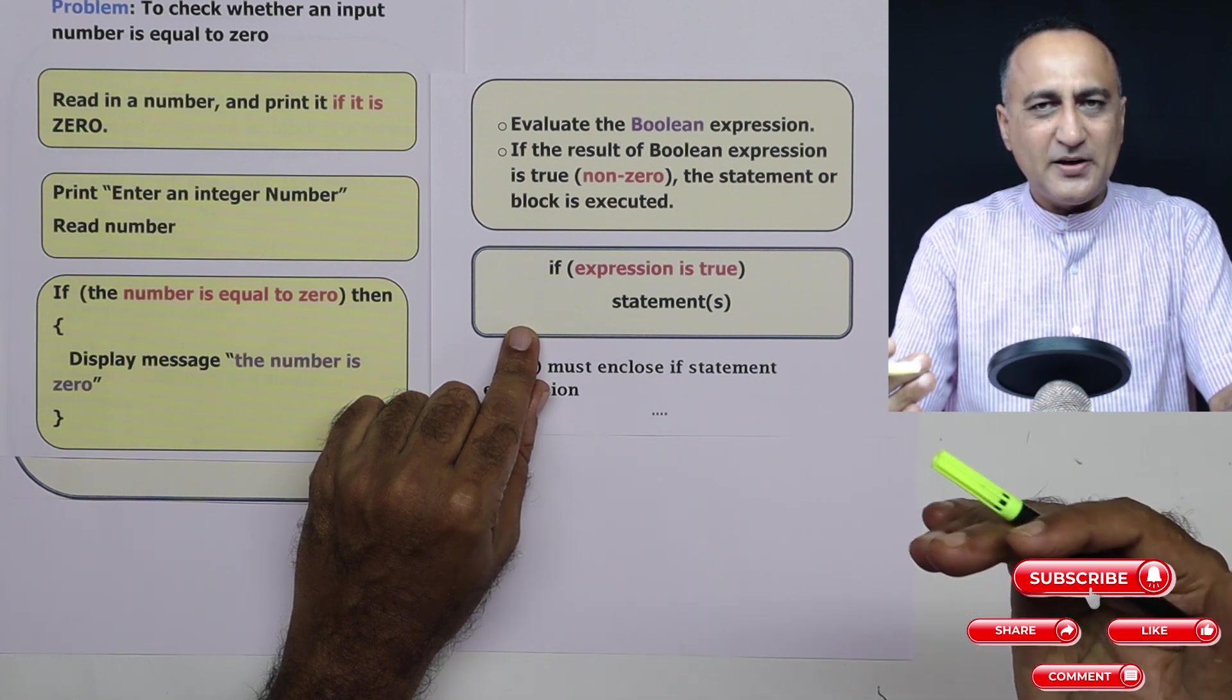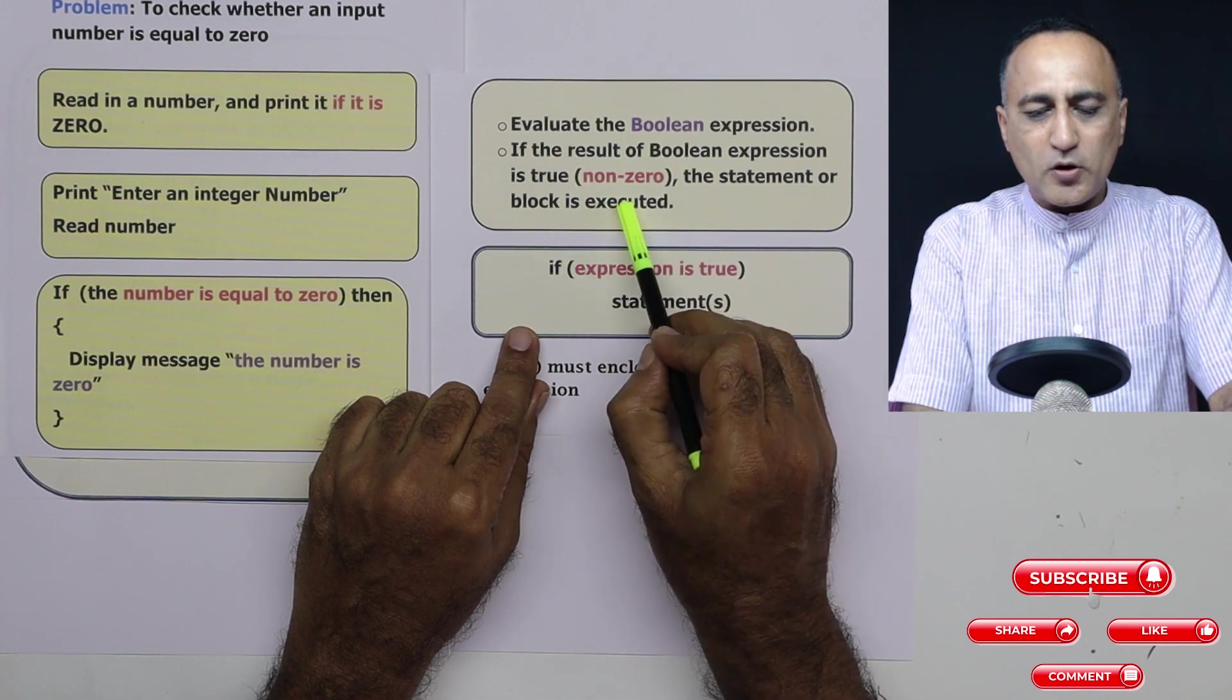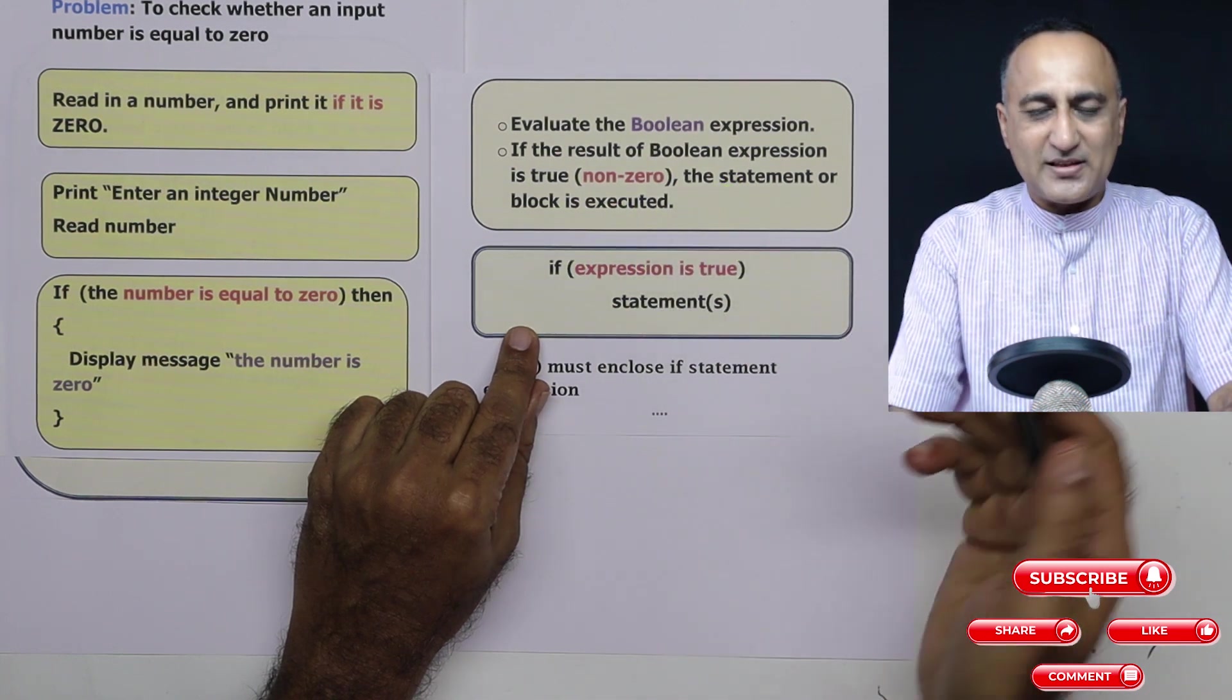If it is false, maybe it will do nothing. So if it is true, the true block will get executed. If it is false, nothing will happen. This is known as the syntax of the if statement.